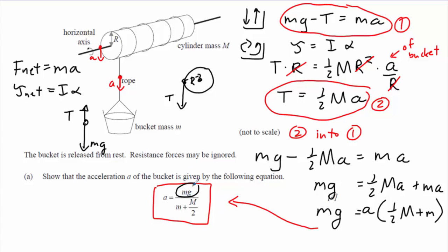And we can make sense of that expression. We've got here the force on the system, the weight of the bucket. In the bottom, we've got two terms that represent inertia. This here is the inertia of the bucket itself, and this capital M over 2, that's the effect of the inertia of that rotating cylinder. So our acceleration is equal to force over inertia.